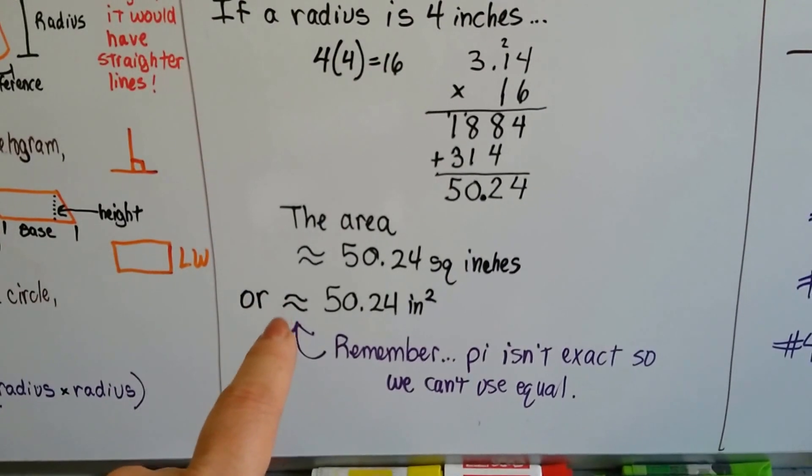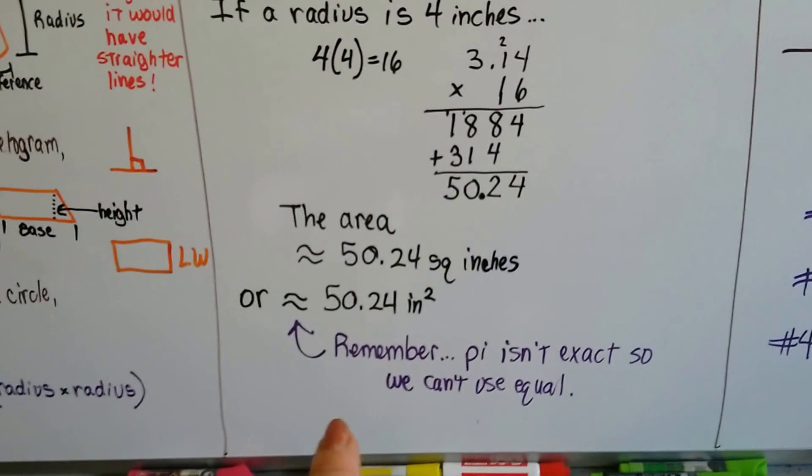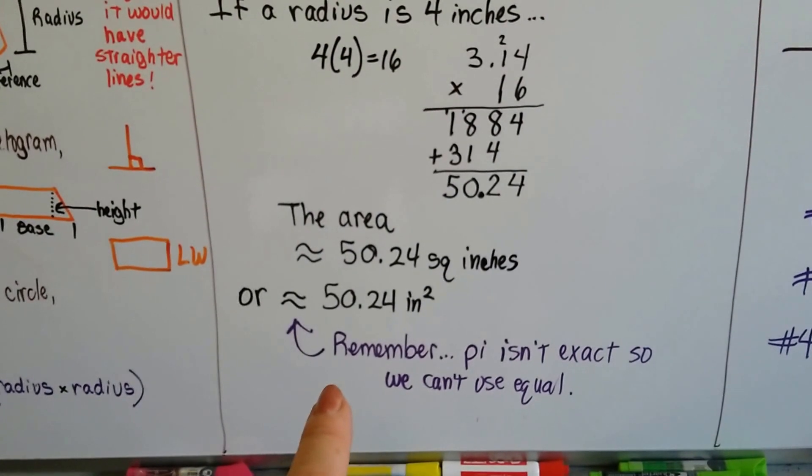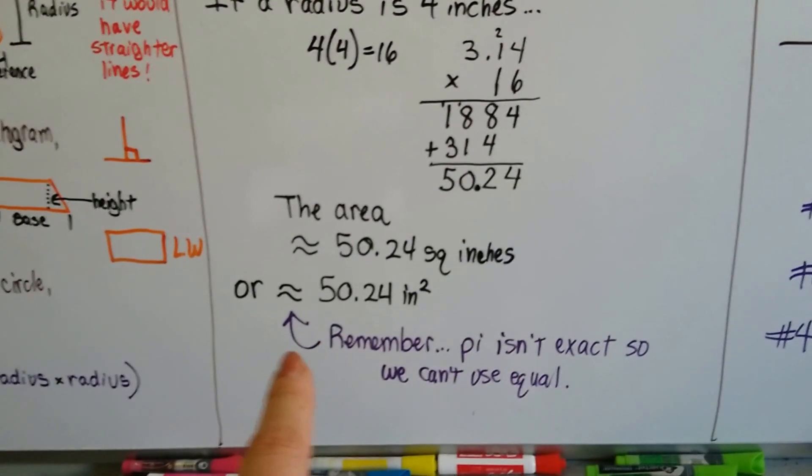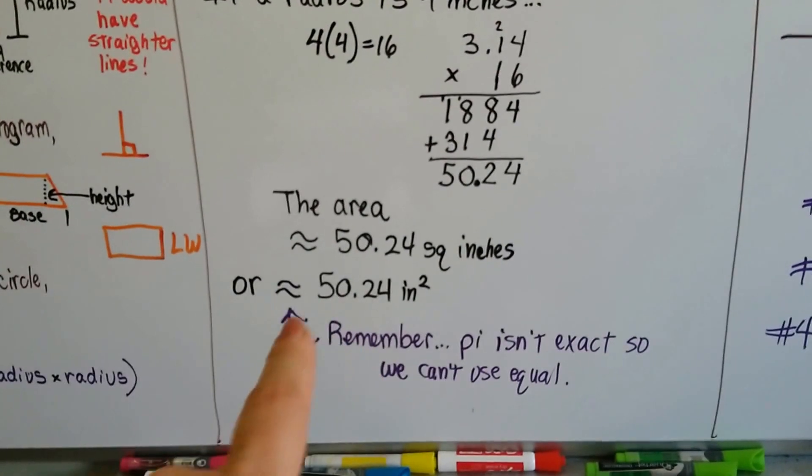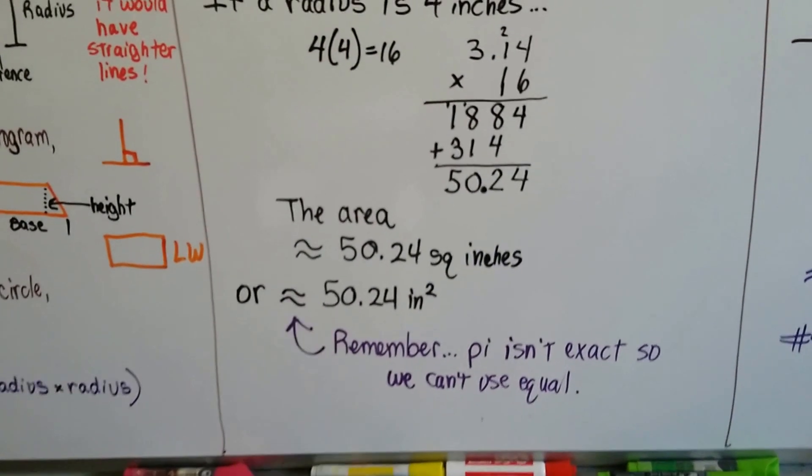And remember, we have to use the approximate symbol because pi isn't exact, so we can't use an equal sign. Since there's more than a million digits for pi, we don't want to have to find the exact number, so we use approximate.